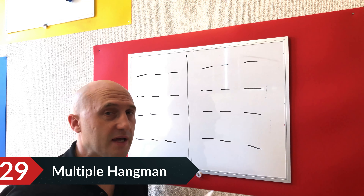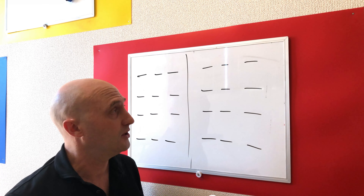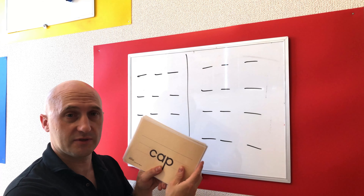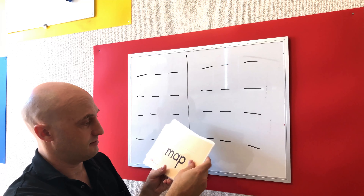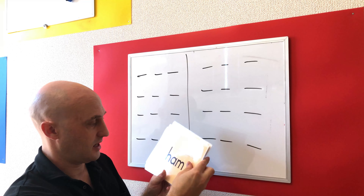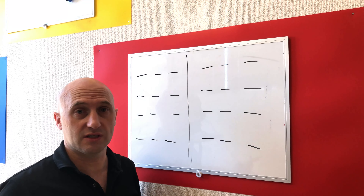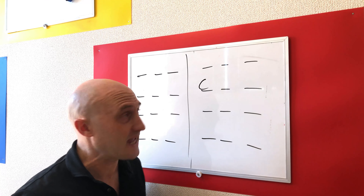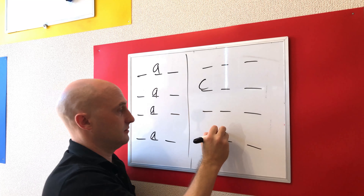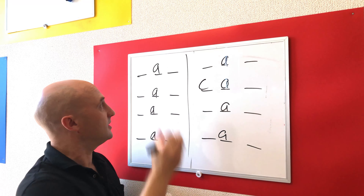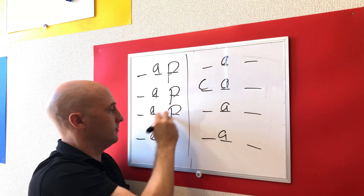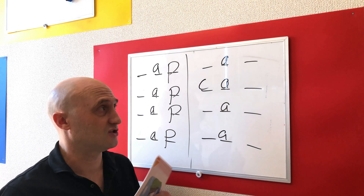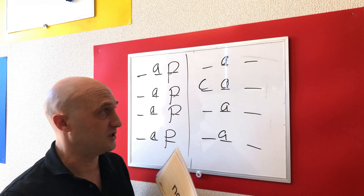Number thirty-one: multiple hangman. This is better, more fun, and more useful than normal hangman. You put all the words together and play them all at the same time. For example, teaching phonics for cap, lap, map, jam, ram, ham, dam, nap. If someone chooses C, it only fills in C on cap. If someone chooses A, you fill in all the A's. If someone chooses P, you fill in P, P, P, P. You can teach the phonics as you go. It's faster than normal hangman where you're just doing one word at a time.